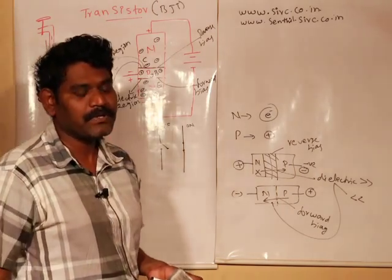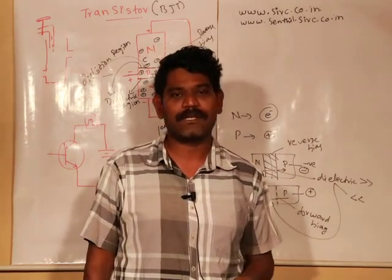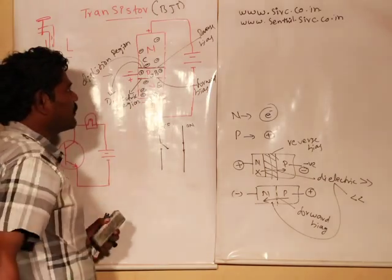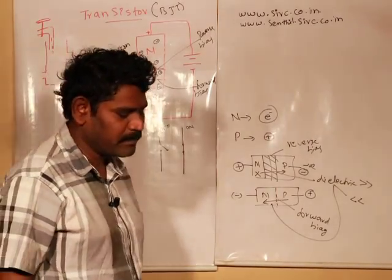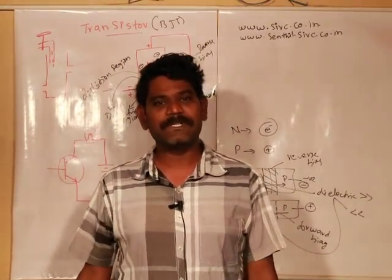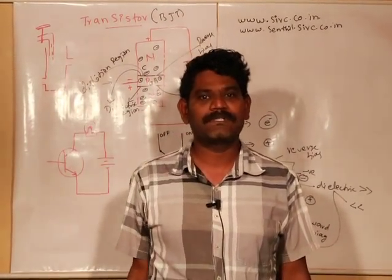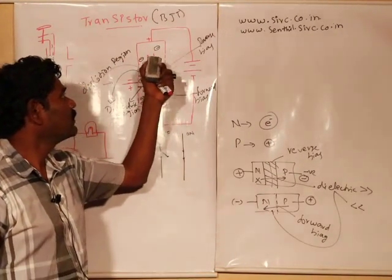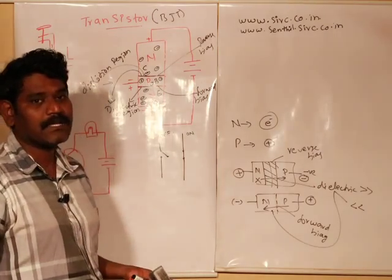Today I am going to discuss about transistors, which is the most important component in electronics. I have taken the BJT — bipolar junction transistors. The transistors are used for two or three major applications: one is for switching purpose, second one is for amplification purpose, and third one is for relay purpose. The major applications are switching, amplification, and relay.